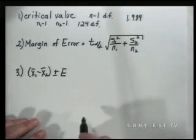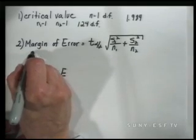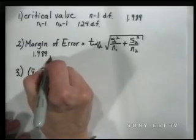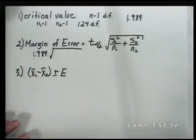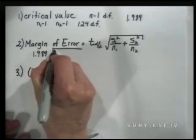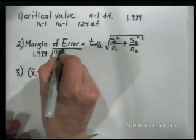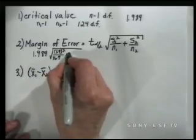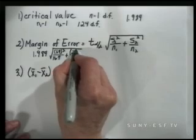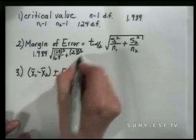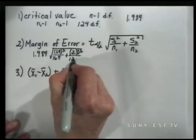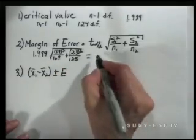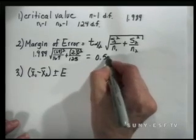The next step is to calculate the margin of error. This is simply the critical value, 1.984, times the square root of the variance of the first population (1.9 squared) over the sample size of the first population (167), plus the variance of the second population (2.3 squared) over the sample size of the second population (125). This gives us a margin of error of 0.5017.